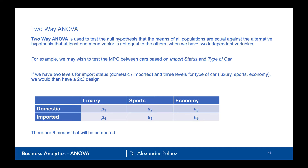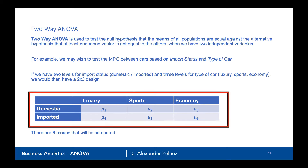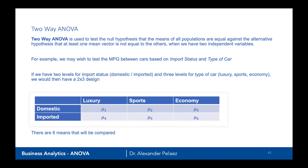This would give us what we call a 2x3 design. You can see the table here where we have luxury, sports, and economy, as well as domestic and imported. We have three levels of one and two levels of another, giving us six total boxes and therefore a 2x3 design. So there are six means that are going to be compared.